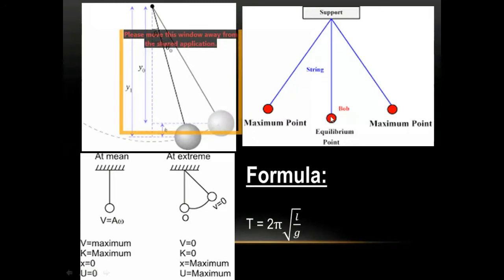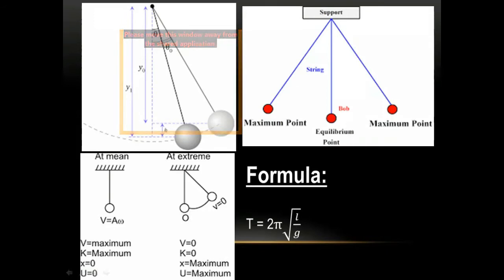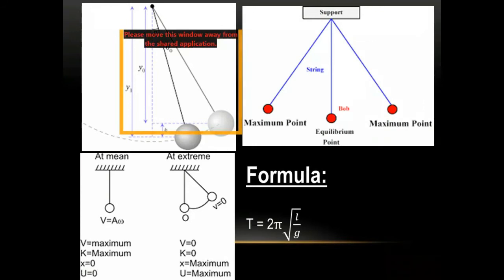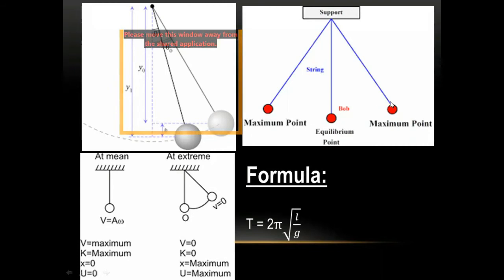To recap pendulum motion: the pendulum starts at equilibrium. When displaced to the maximum point and released, it moves toward equilibrium due to gravity, then continues to the other maximum point due to inertia, where velocity becomes zero again. It then returns to equilibrium again due to gravity. At maximum points velocity is zero; at equilibrium velocity is maximum.